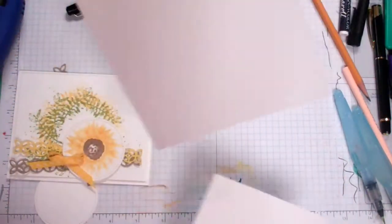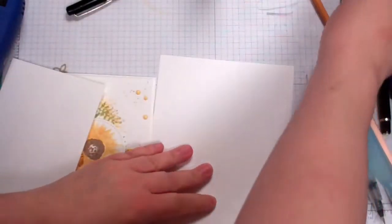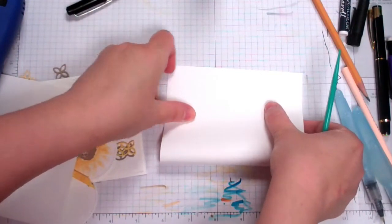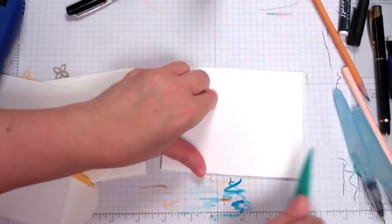We're going to start with a thick piece of Whisper White that's cut to 8 and a half by 5 and a half, and we're just going to fold that in half like so and have that at the ready.